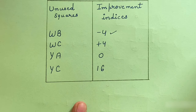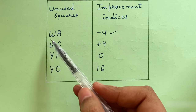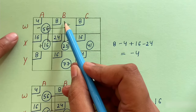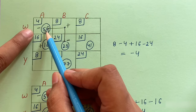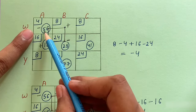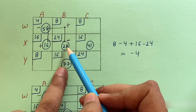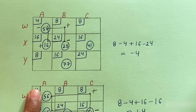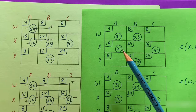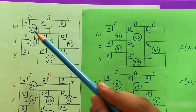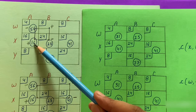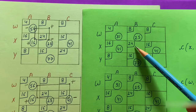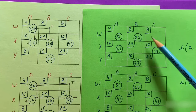There is still one negative value, so we improve the WB cell. In the closed loop for WB, the cells with negative signs have values; the minimum is 25. We add 25 to cells with positive signs and subtract from cells with negative signs. In the new matrix, we have added 25 to get 41, subtracted 25 to get 31, and one cell becomes 0 (leaving nothing there).